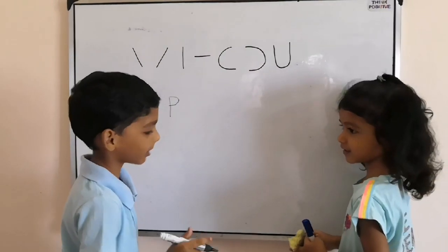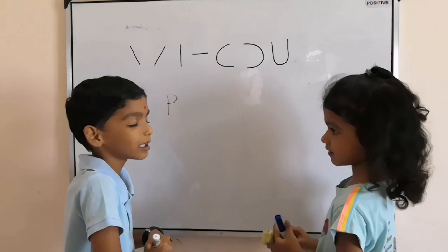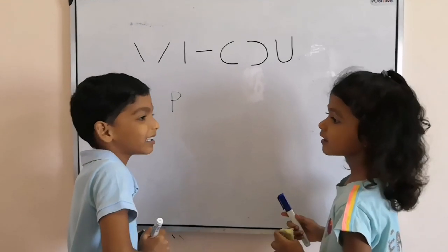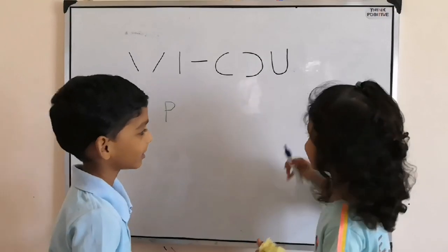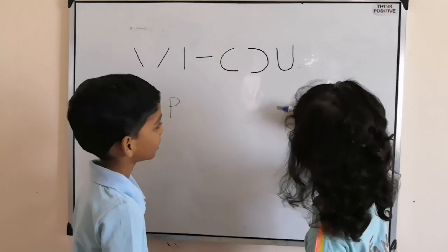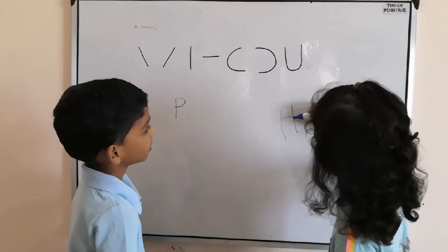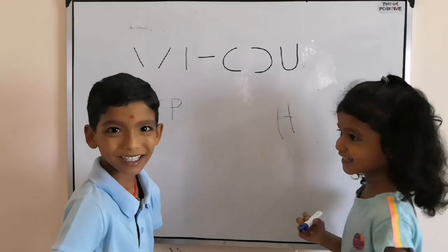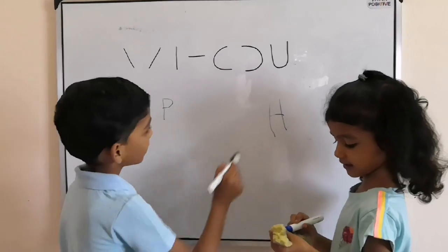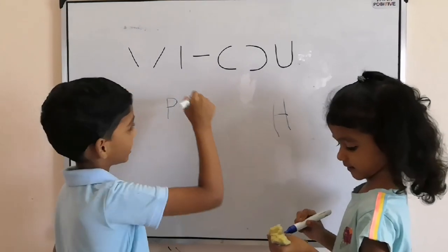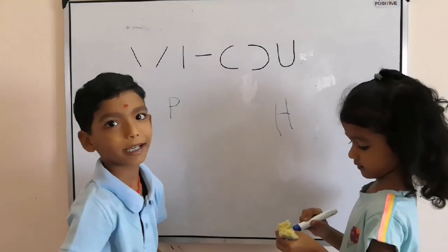When you write one alphabet — H. She writes H. One standing line, then this line.